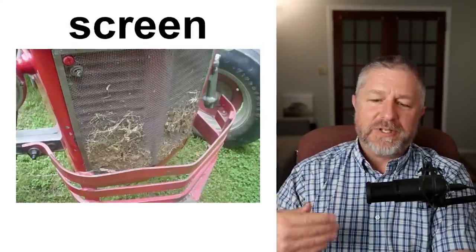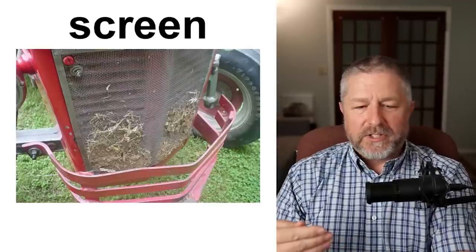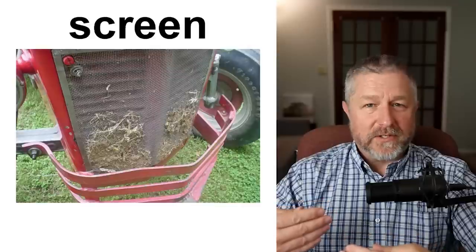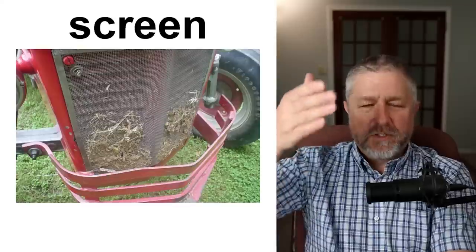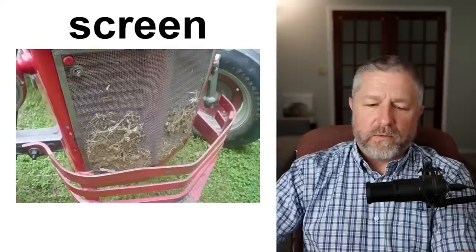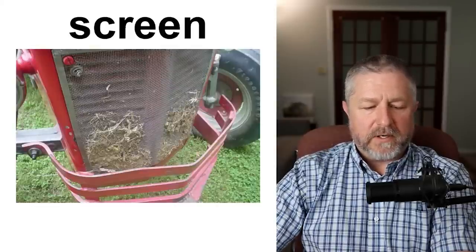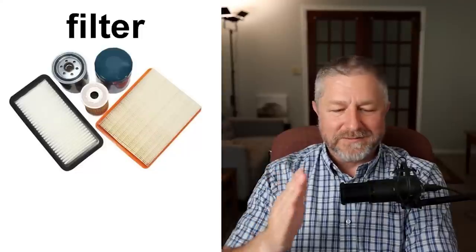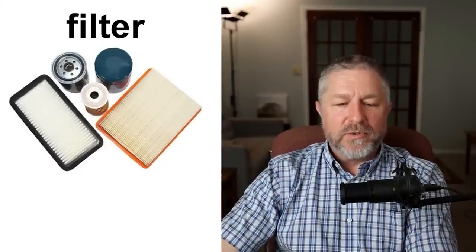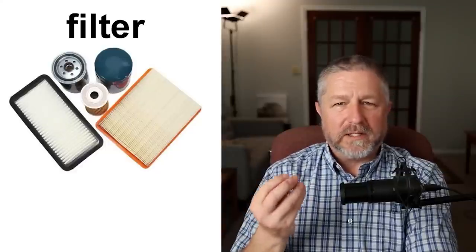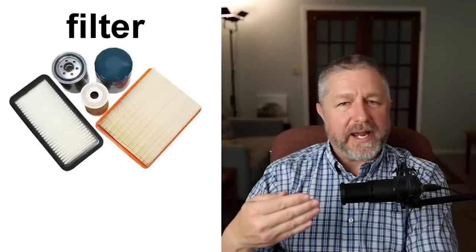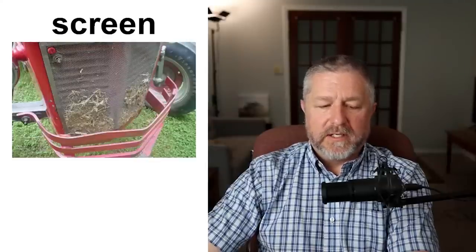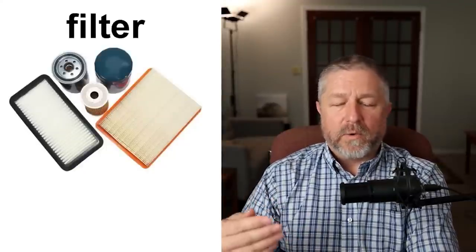Sometimes you don't want things getting into a machine, so there is a screen in front. Screens are usually made out of metal. For example, someone working didn't want grass to enter the tractor, so there's a screen at the front. This is different from a filter. A filter is usually made out of fiber or something finer and is used to keep things clean — you can filter the air or filter oil. The screen is usually on the outside; on the inside you might have a filter to keep the air or oil clean.